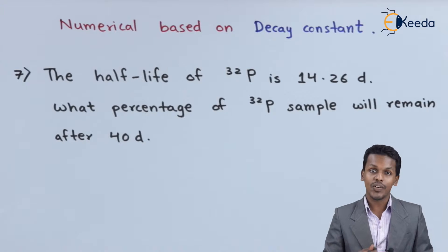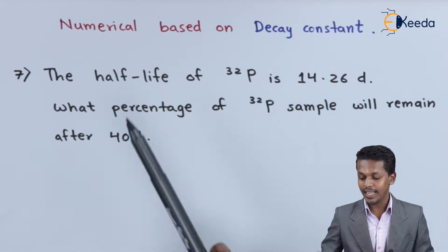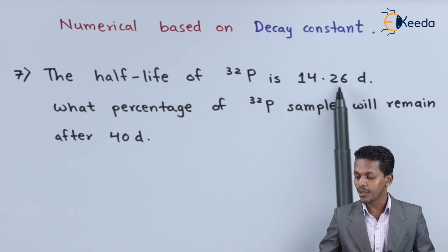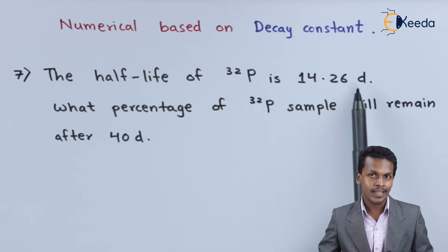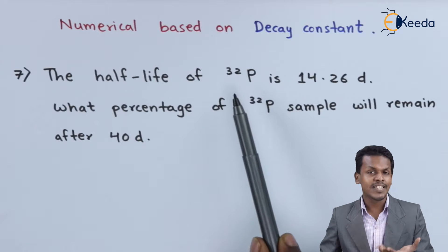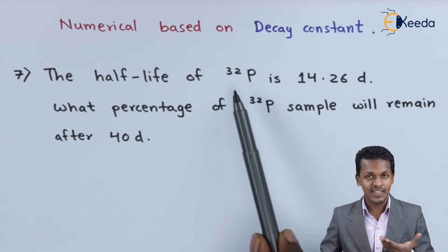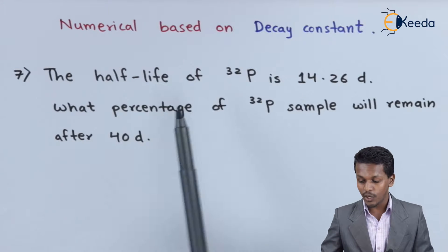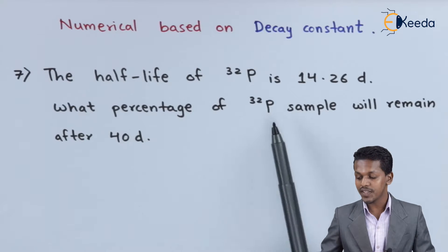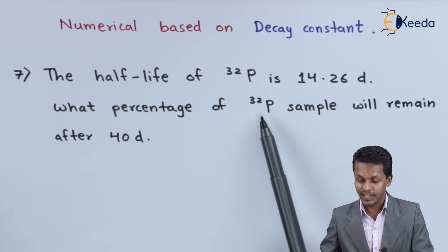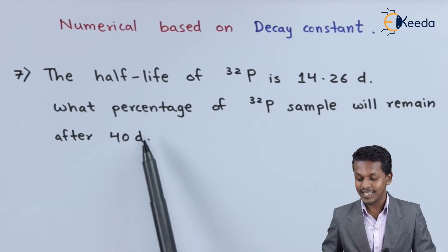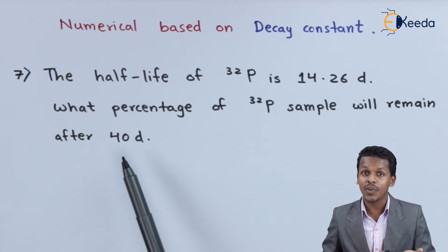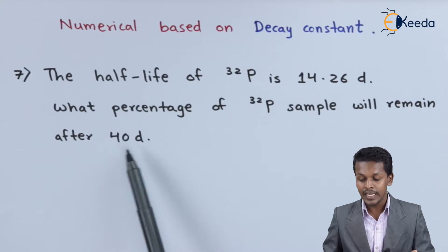Here we have the half-life which is found to be 14.26 days. Based on that we can easily calculate the decay constant, lambda. And based on lambda we have to calculate the percentage of Phosphorus that has been left after 40 days. This 40 days is the time given, T, which is found to be 40 days.